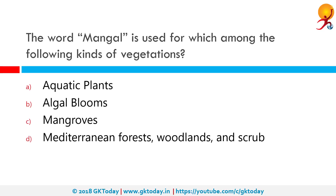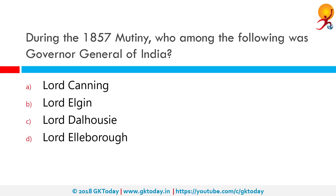The word 'Mangal' is used for which among the following kinds of vegetation? The correct answer is mangroves.